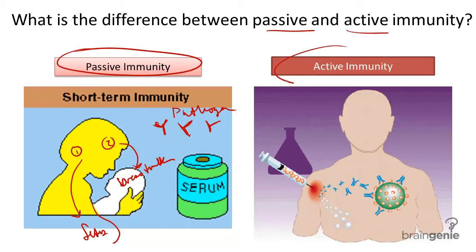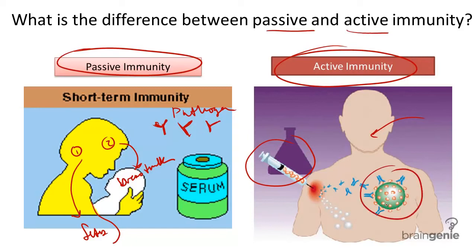Active immunity, on the other hand, is when somebody gets exposed to antigens, whether it be by an immunization or just entry into the body through openings in the skin. It results when you're exposed to antigens and your body's own B cells trigger memory cells to remember that antigen for the future.